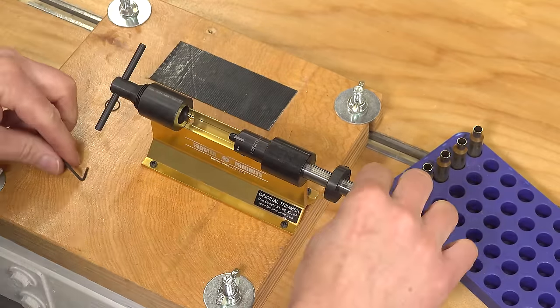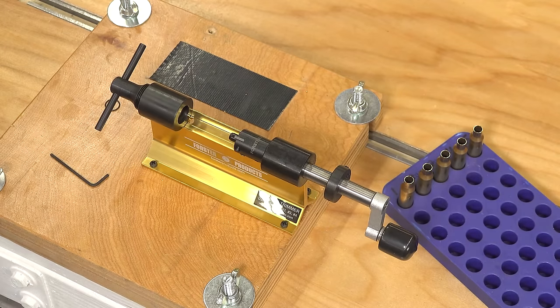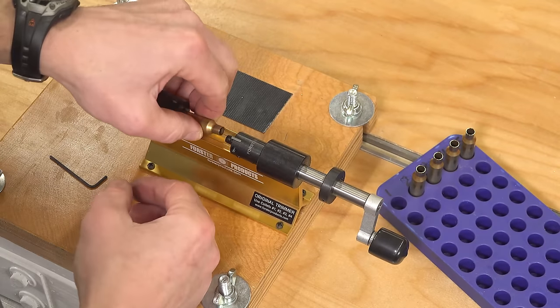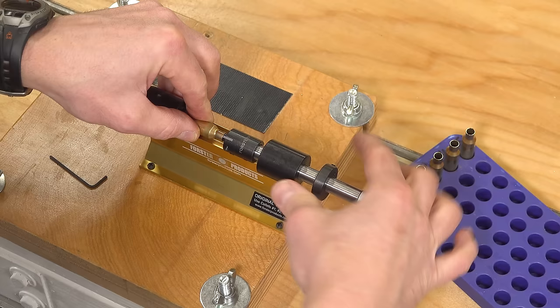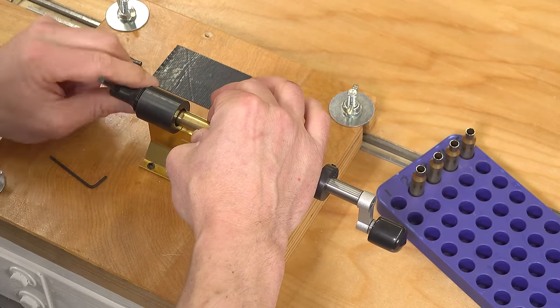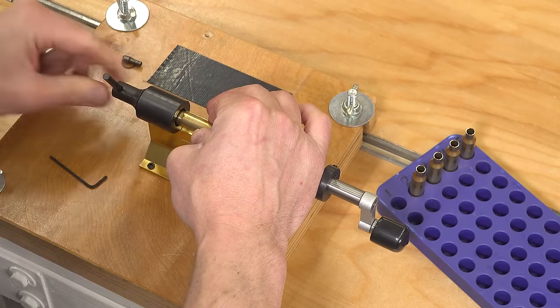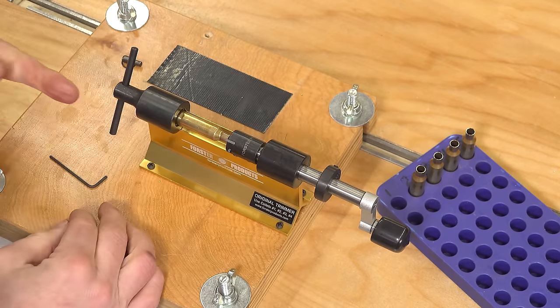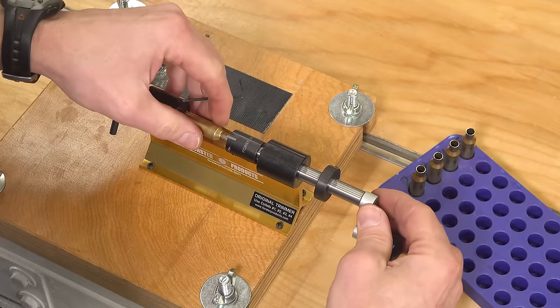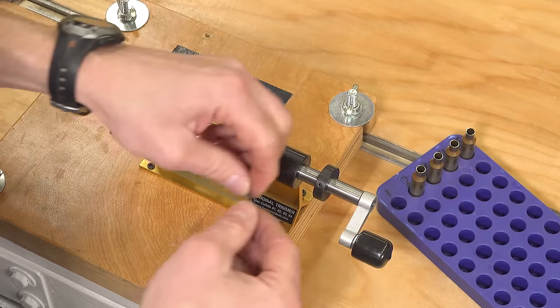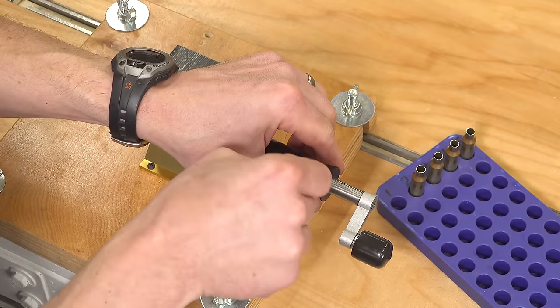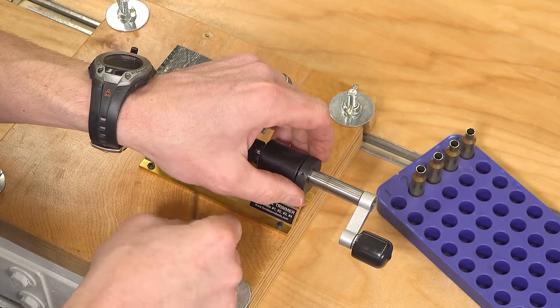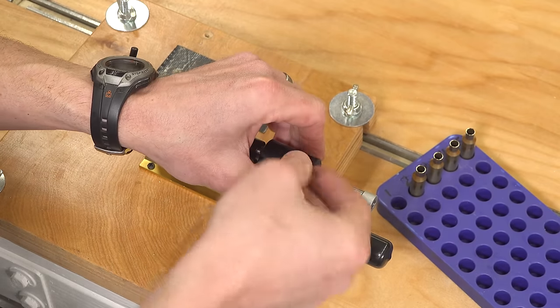That's all there is to install the 3-in-1 case mouth cutter. Now that we've installed the tool, let's set our trim length and trim some cases. Basic idea here is generally the same. We're going to insert the case into the collet, tighten the collet. That gets our positioning correct along that axis, and I'm going to bring the cutter up to where it's just starting to contact the case mouth. We'll get the stop block set appropriately.